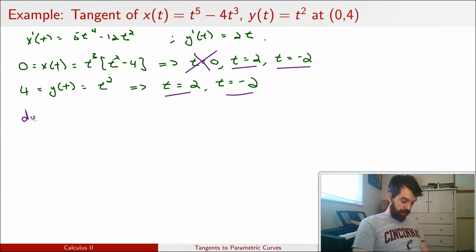So the first thing I'm going to do is if I want to look at what dy/dx is, the first thing I'm going to do is evaluate it at t equal to positive 2, because that was one of my cases. And the formula tells us that dy/dx is going to be equal to dy/dt divided by dx/dt. So in other words, dy/dt, this is going to be 2t, all divided by 5t to the fourth minus 12t squared.